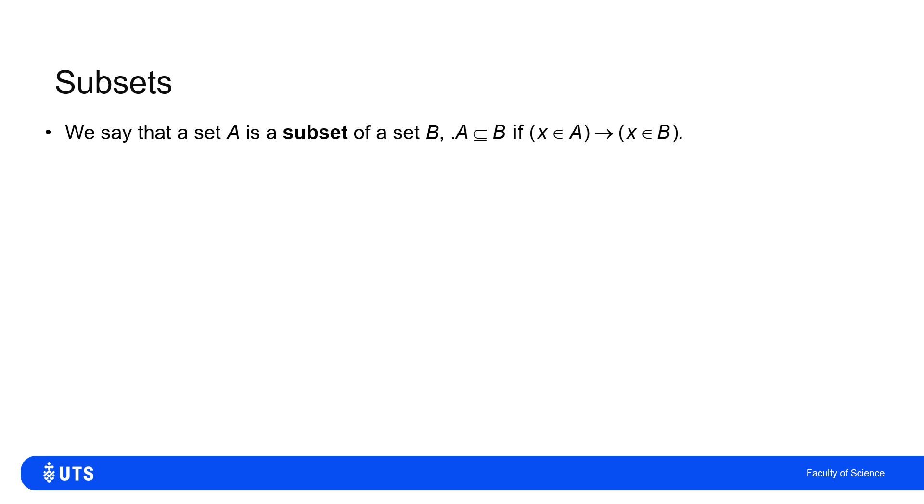We say that a set A is a subset of a set B, and we write that as A subset B, if the statement X belongs to A implies that X belongs to B. So every time we know the element is in A, we know it must always be in B as well. So what we can say from that is that if A is a subset of B, then A intersection B complement has to be empty. So which elements are in A and not in B? There aren't any.